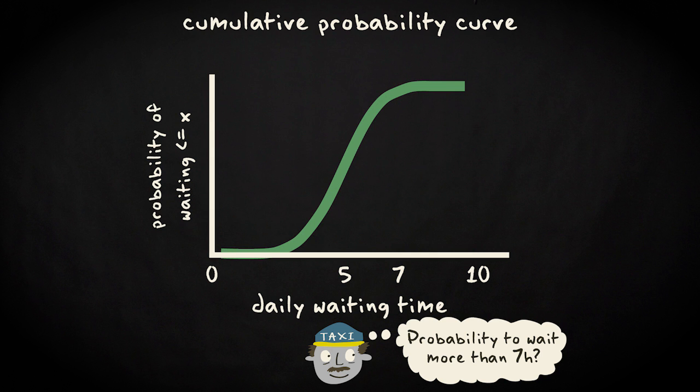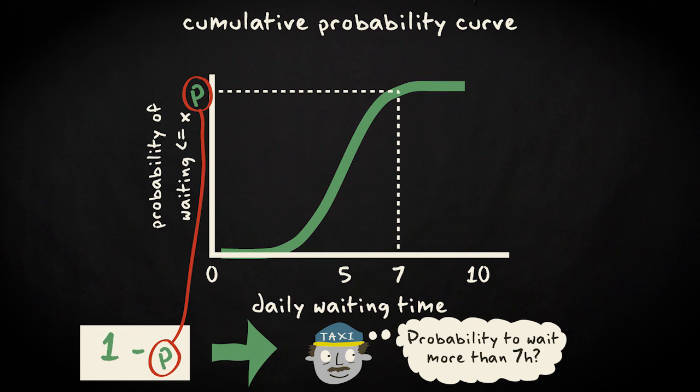So, you would read the y-values corresponding with an x-value of 7 hours. Next, you would subtract this probability from 1 because you're interested in the complementary probability of waiting longer than 7 hours, not shorter.